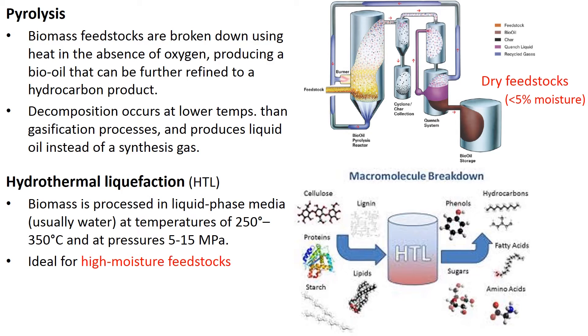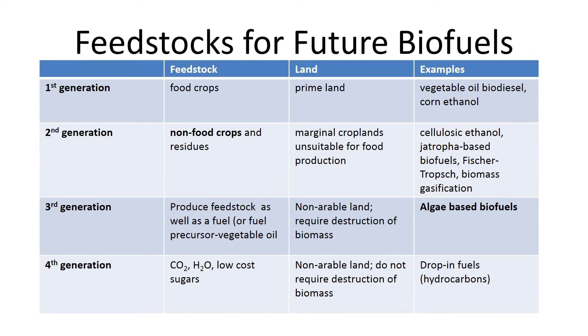Depending on the feedstock source and land use, there are four different categories, starting from use of food crops such as corn or soybean to produce corn ethanol as the first generation, up to use of CO2 in the fourth generation.